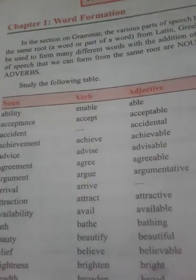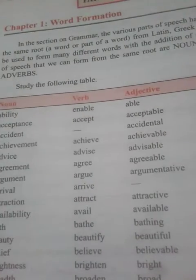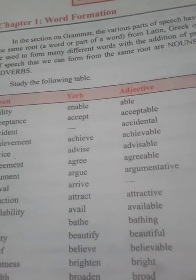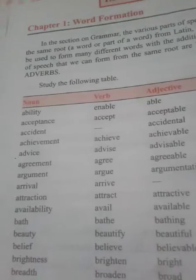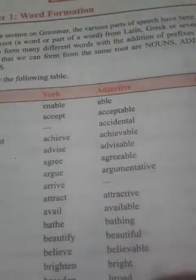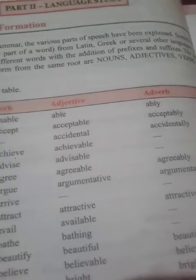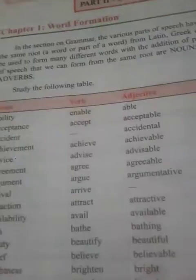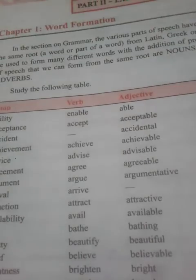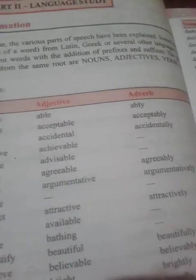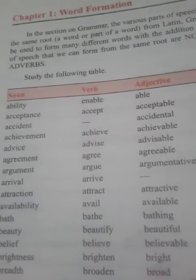Then: accident — there is no verb for accident — adjective: accidental, adverb: accidentally. Next: achievement, verb: achieve, adjective: achievable, and there is no adverb.